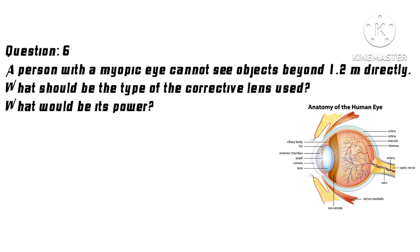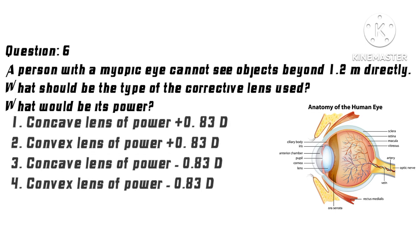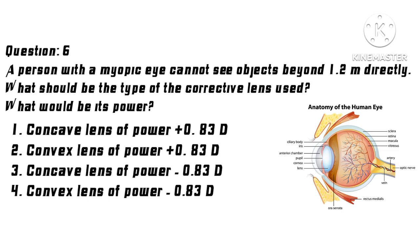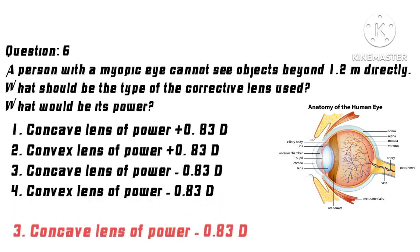Question 6: A person with a myopic eye cannot see objects beyond 1.2 meters. What should be the type of corrective lens used and its power? Options: 1. Concave lens of power +0.83D, 2. Convex lens of power +0.83D, 3. Concave lens of power -0.83D, 4. Convex lens of power -0.83D. Correct answer: 3. Concave lens of power -0.83D.